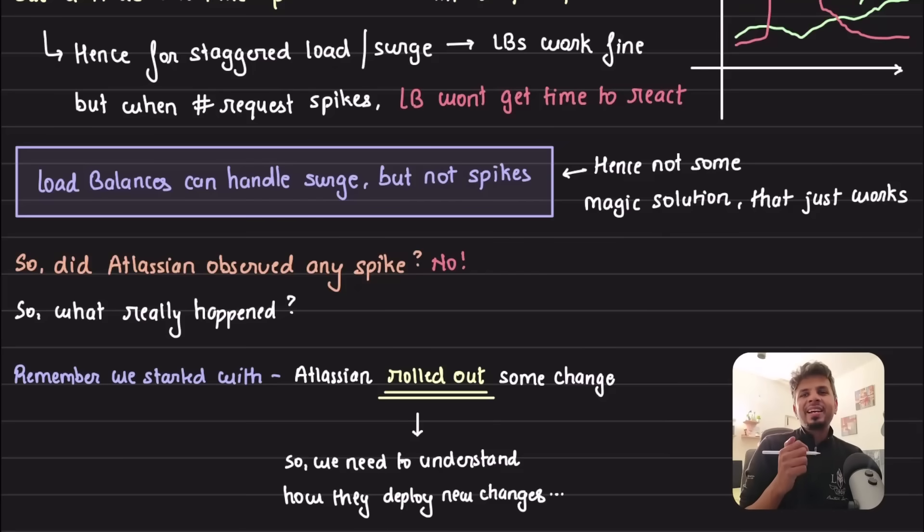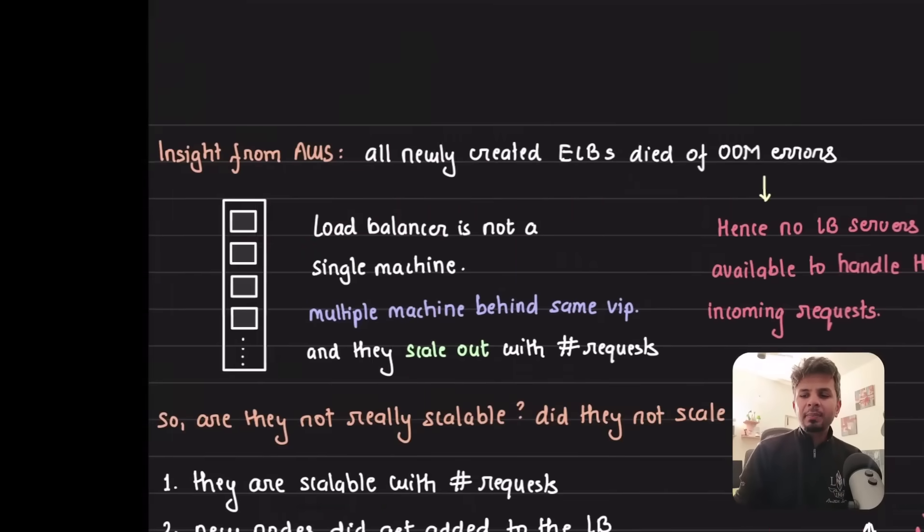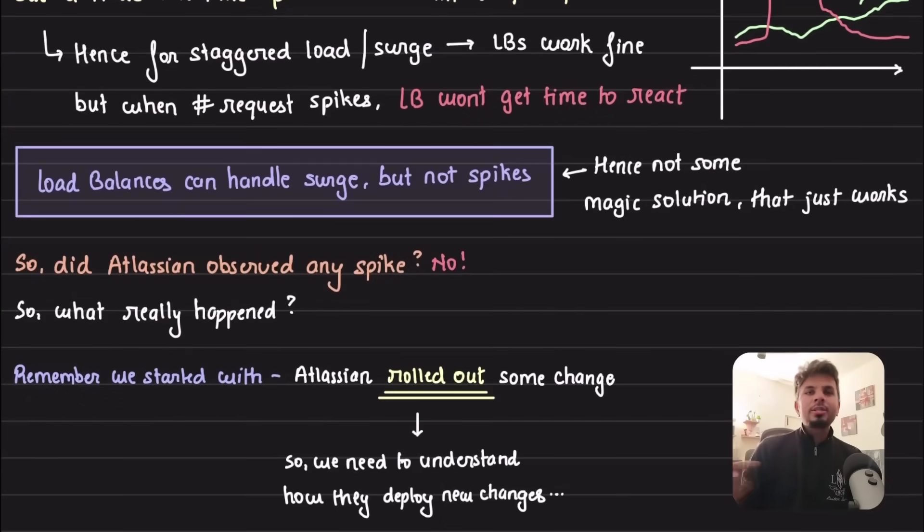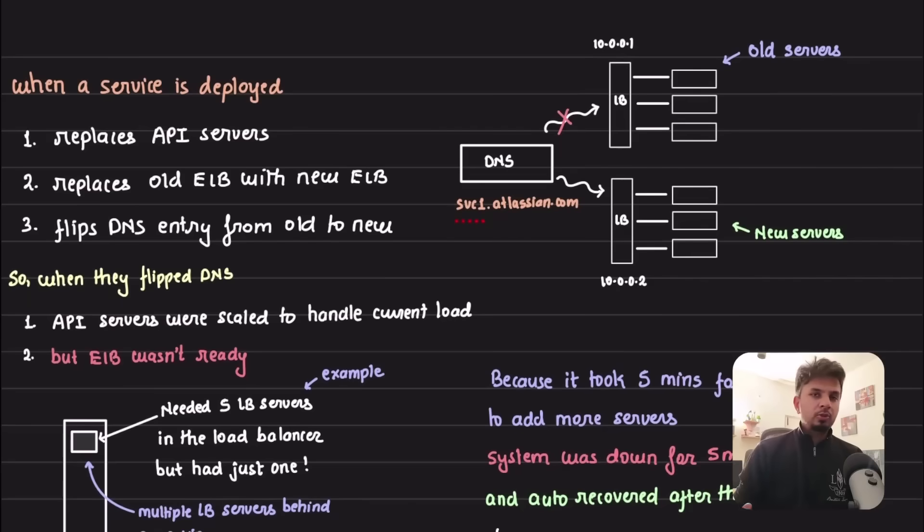Did Atlassian observe any spike? The answer is no. So what happened if there was no spike, no application errors? Remember what we started with - Atlassian rolled out some change. So let's dig deeper into how Atlassian rolls things out.